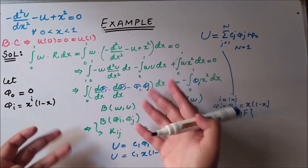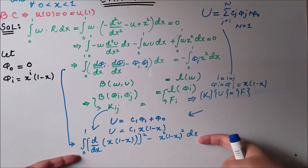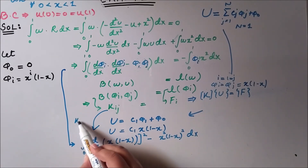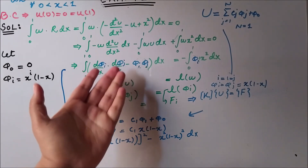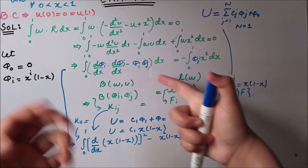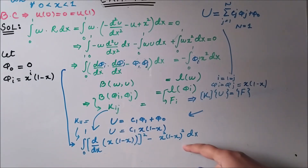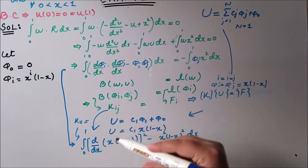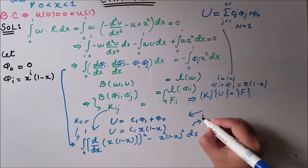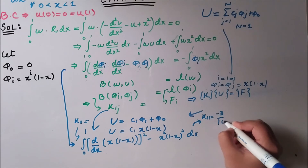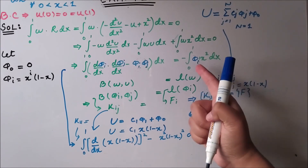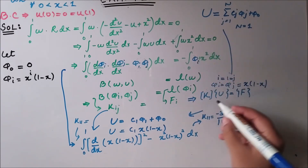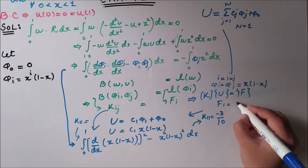Plugging these values in, we compute K_11 by taking the derivative of x(1 − x) and squaring it, integrated over [0, 1], plus the term with x(1 − x) squared. After solving, K_11 equals −3/10. Similarly, plugging phi_i into the load vector expression, we get f_1 equals −1/20.